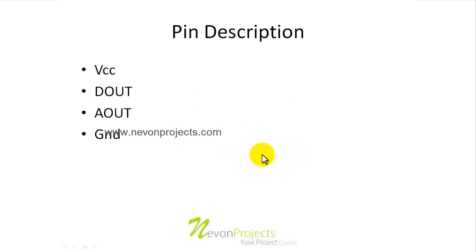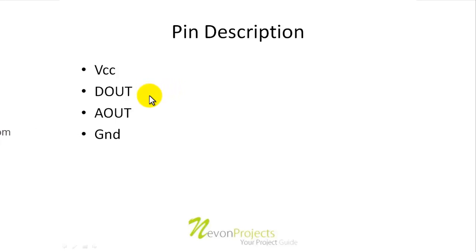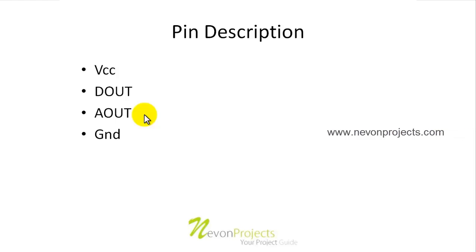We will see them one by one. The first one is the VCC, that means the plus 5 volt — it receives supply from our circuit. The second is D out, which is a digital output pin — it either goes high or it goes low. Then there is A out, which is the analog out pin. It gives the analog voltage related to the intensity and presence of alcohol in its ambience.